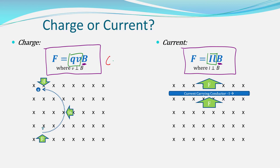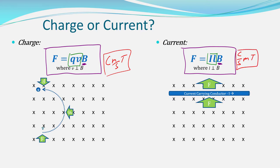For F = QVB, Q is in coulombs, velocity in metres per second, and B in tesla. For F = BIL, current is in amps (coulombs per second), length is in metres, and field is in tesla. The units work out the same in both cases, and we just express them as newtons. So for a charge you need its velocity and the amount of charge; for a current you need how much current and the length of the wire.